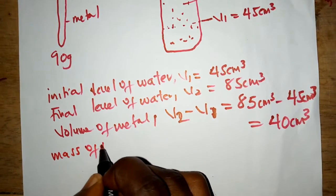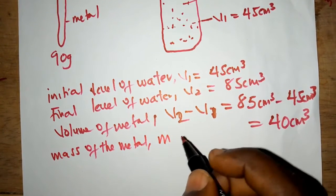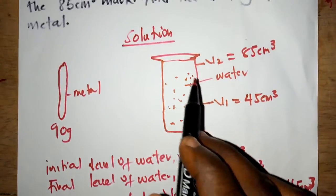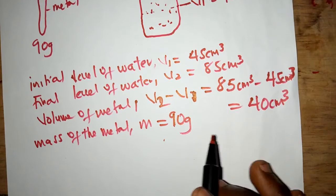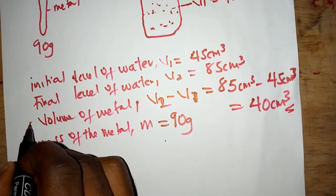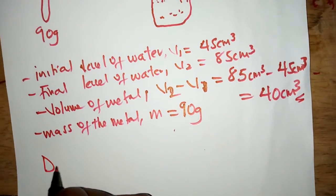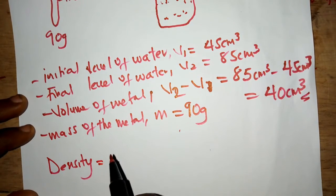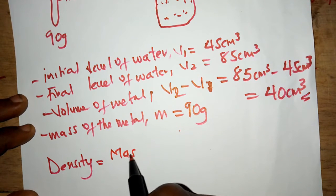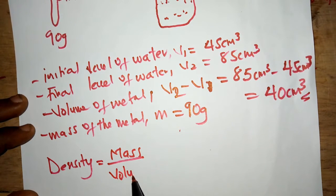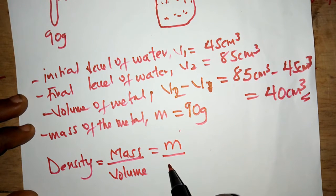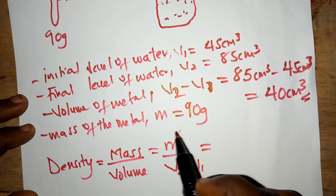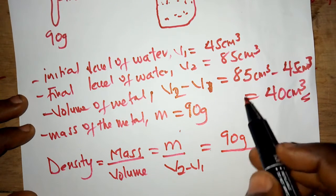The mass of the metal, M, equals 90 grams. Now, density is the mass per unit volume of the substance. So density equals M over V, which is V2 minus V1. Our mass M is 90 grams and our volume V2 minus V1 is 40 centimeter cube.